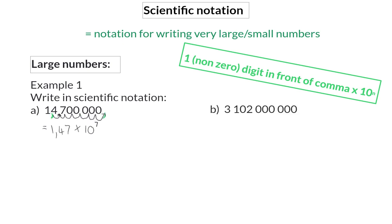In example B, the comma that is right at the end of the value will now be moved to directly after the first non-zero digit, which is the 3. So we will start off with 3,102. Now we need to determine how many times we need to multiply by 10 to still represent the original value. So here we moved 3, 6, 9 spaces, so that would be 10 to the power of 9.